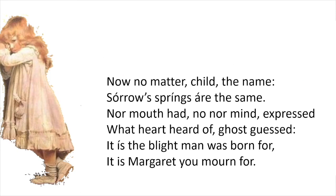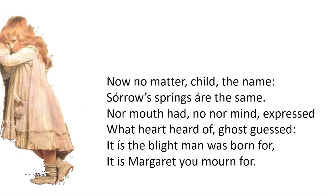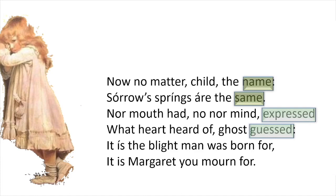Looking at those lines again from the point of view of the rhyme scheme — Hopkins keeps those masculine one-syllable rhymes through 'name, same, expressed and guessed,' but he goes back to the feminine rhyme for the final couplet. He's come full circle. He's answered the question that he asked at the beginning — can she really cry for the leaves falling? And the answer is that, unconsciously, she's crying for herself. By using the feminine rhyme here, he emphasises the unity of the thought content of the poem.